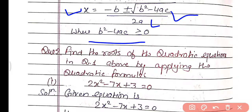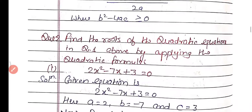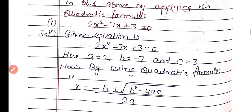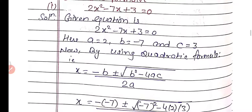Now proceed for question number 2: find the roots of the quadratic equations in question number 1 by applying the quadratic formula. All the parts from question number 1 we will do in this question number 2 using the quadratic formula. The first part is 2x² − 7x + 3 = 0.